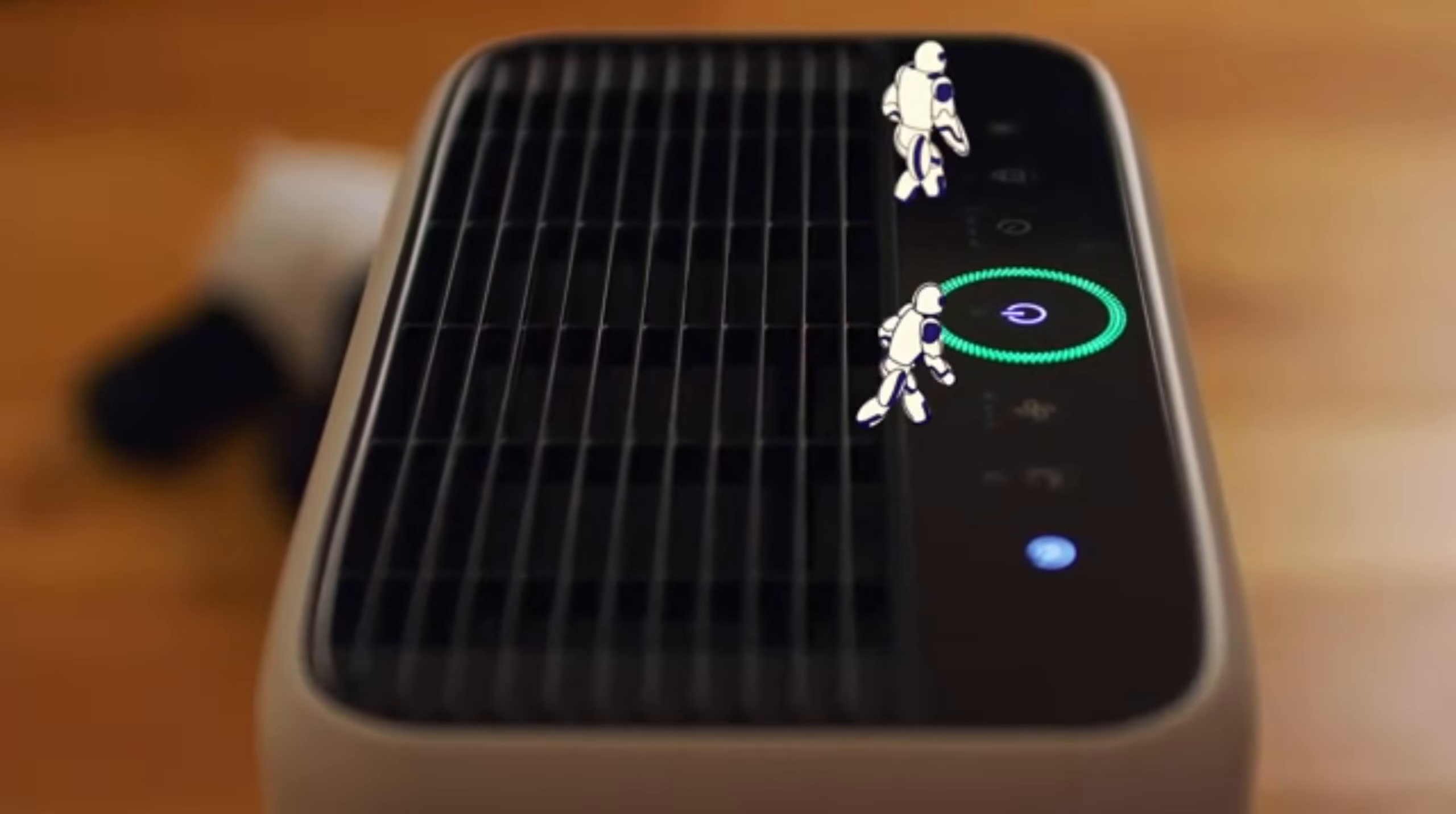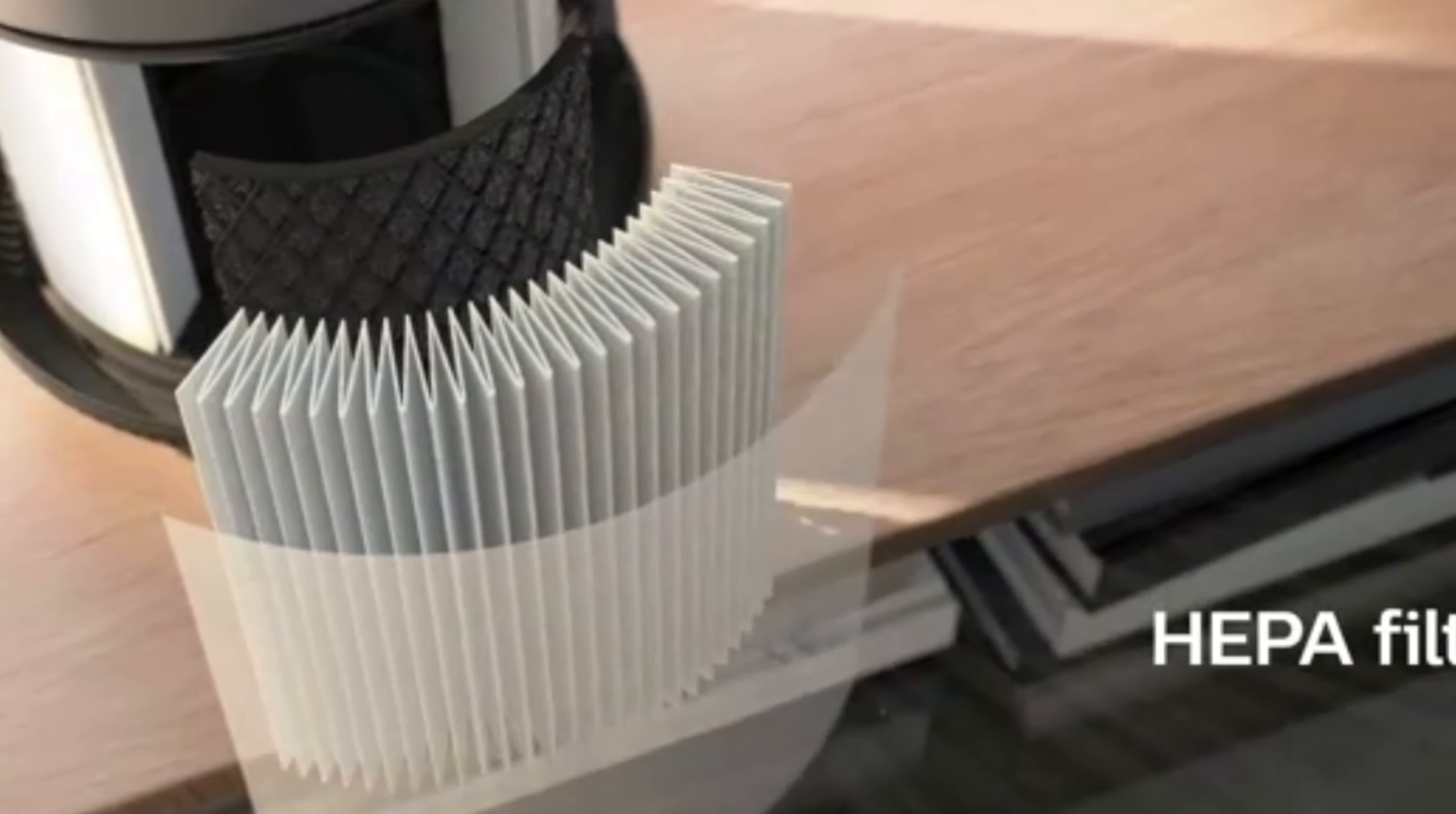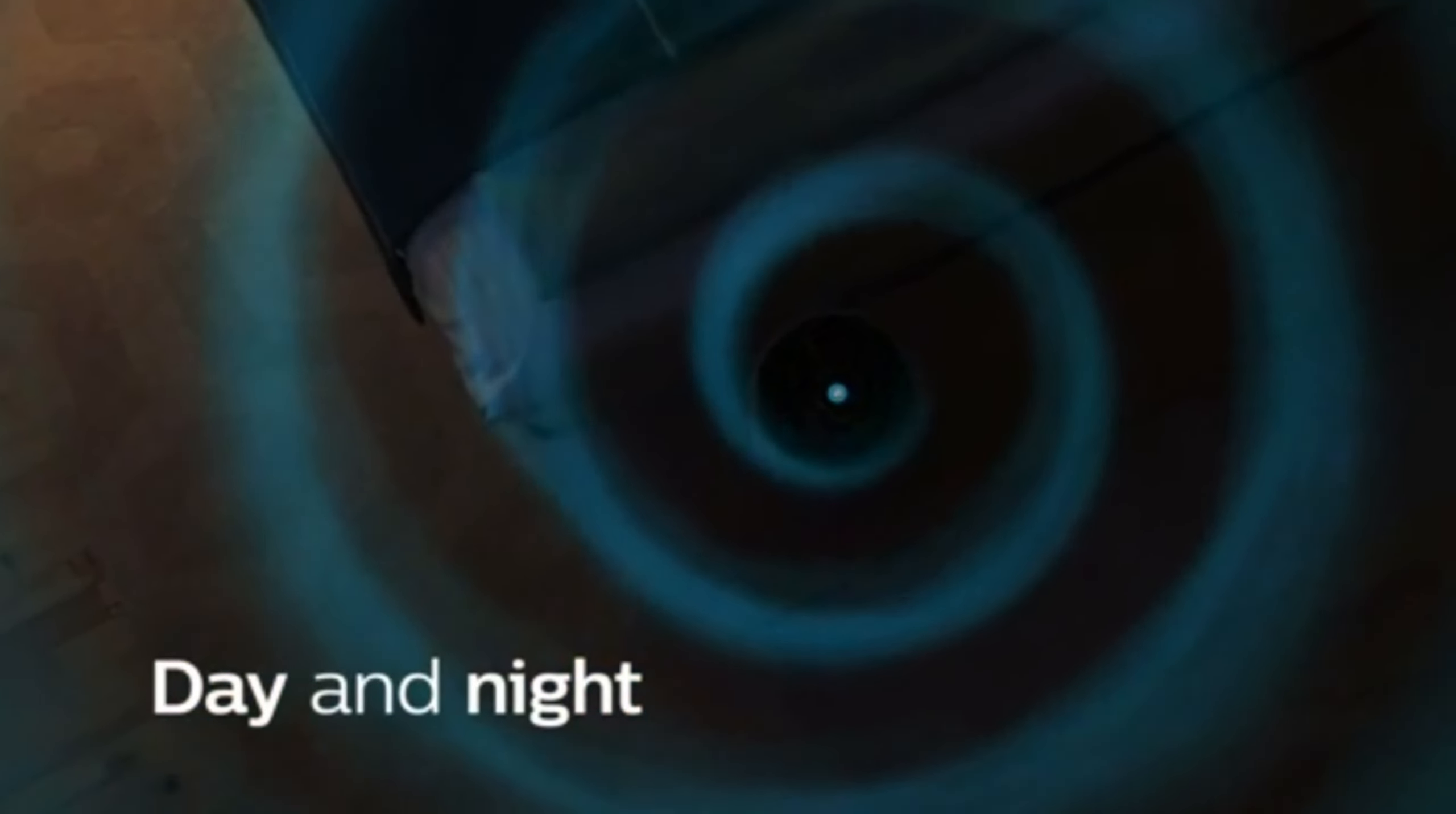Clean, fresh air is essential for a healthy living environment. The Kauway AirMega 200M True HEPA, an activated carbon air purifier, is here to help you achieve just that. This air purifier is designed to remove allergens, pollutants, and odors from the air, ensuring the air you breathe is of the highest quality. Let's take a closer look at how this gadget can improve your indoor air quality.